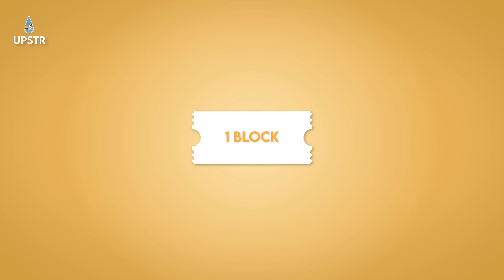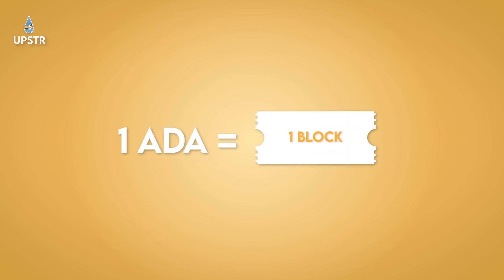With over 3,000 staking pools to choose from, how do you know where to put your ADA? To help make this decision, it's good to know how which pool is chosen to produce a block. You can think of each ADA token in a staking pool as a raffle ticket — a ticket to win the chance to produce a block. The more ADA there is in a staking pool, the more raffle tickets they will have, and the more chance of producing a block.